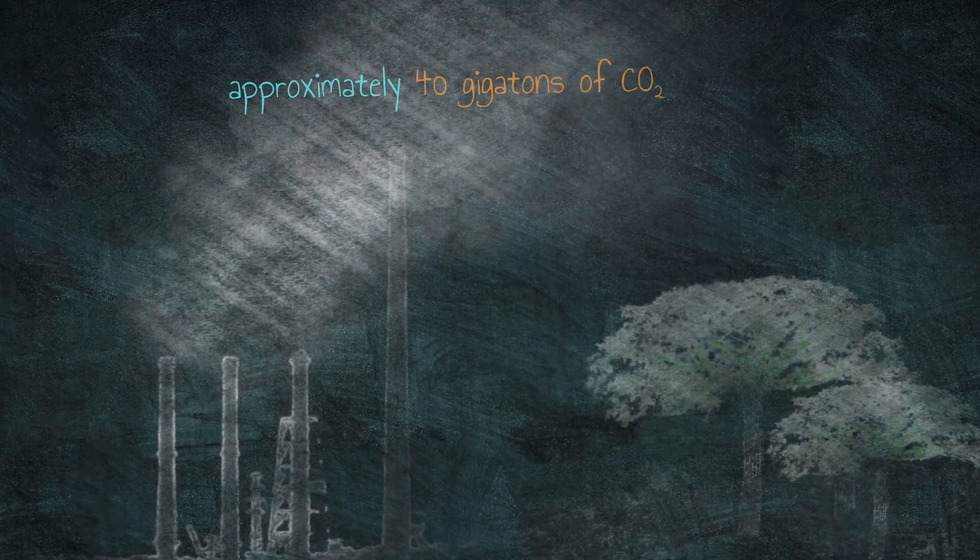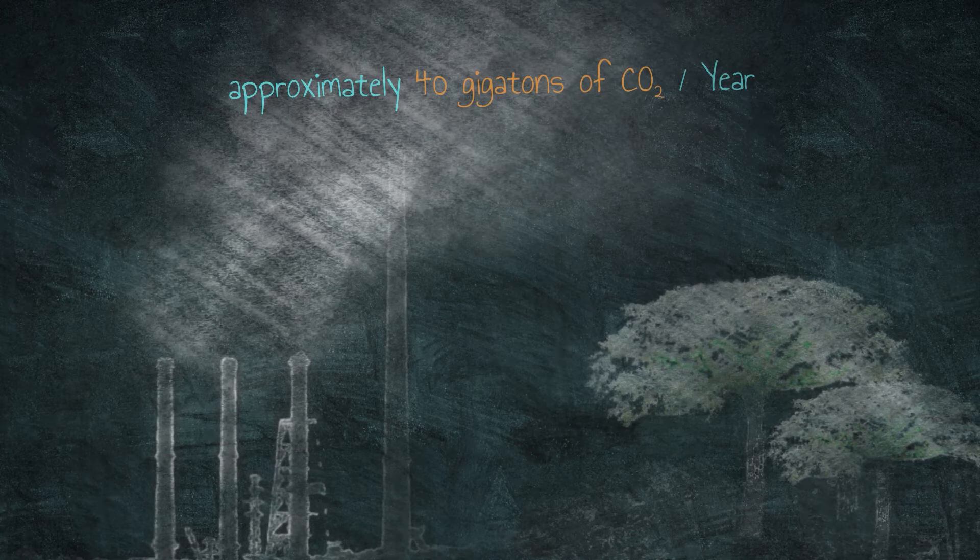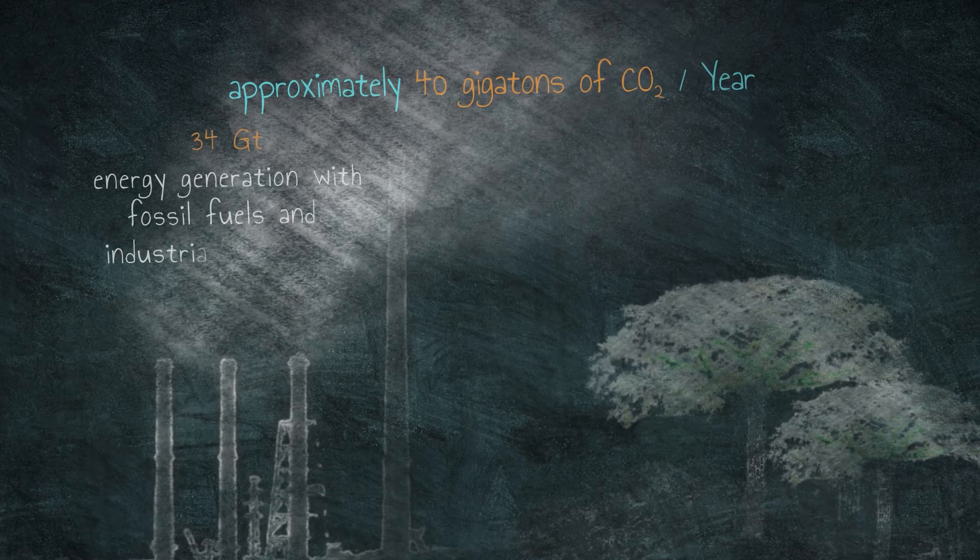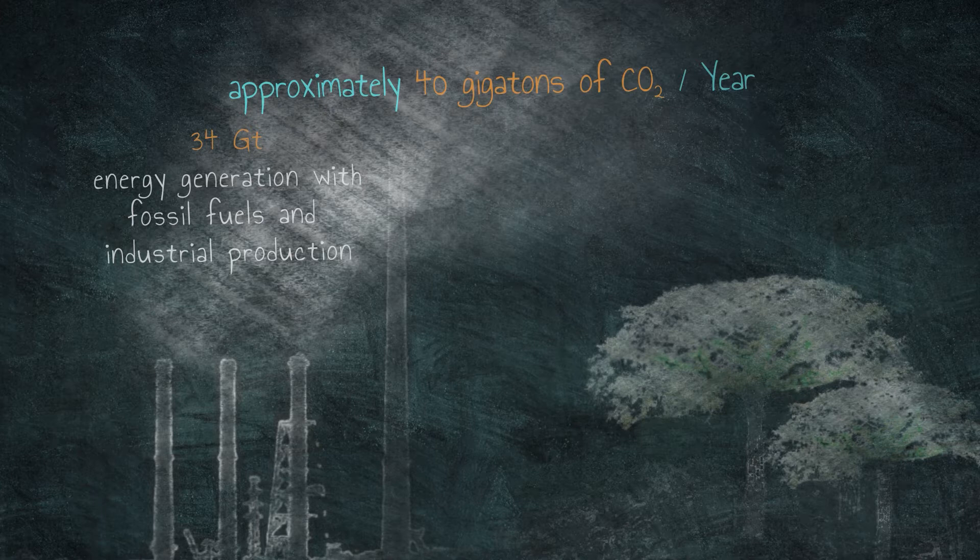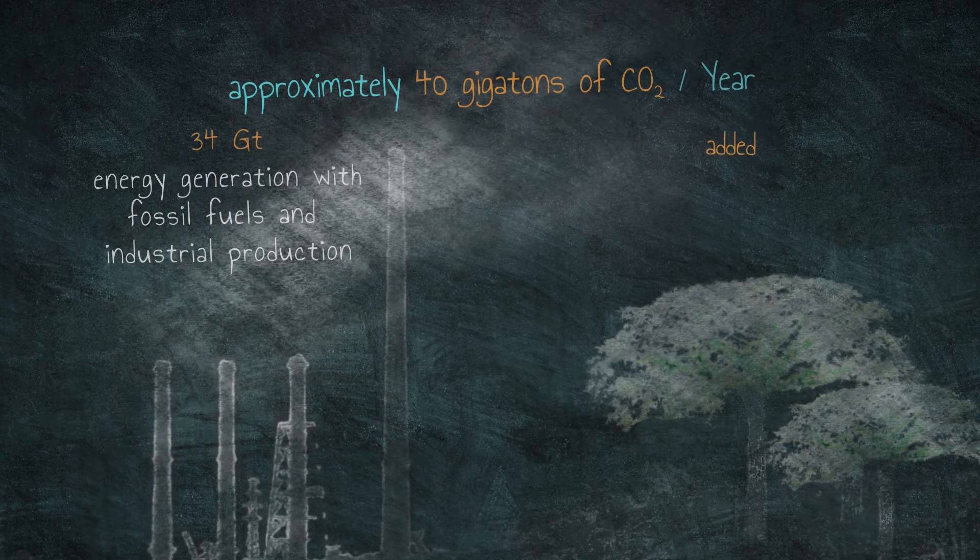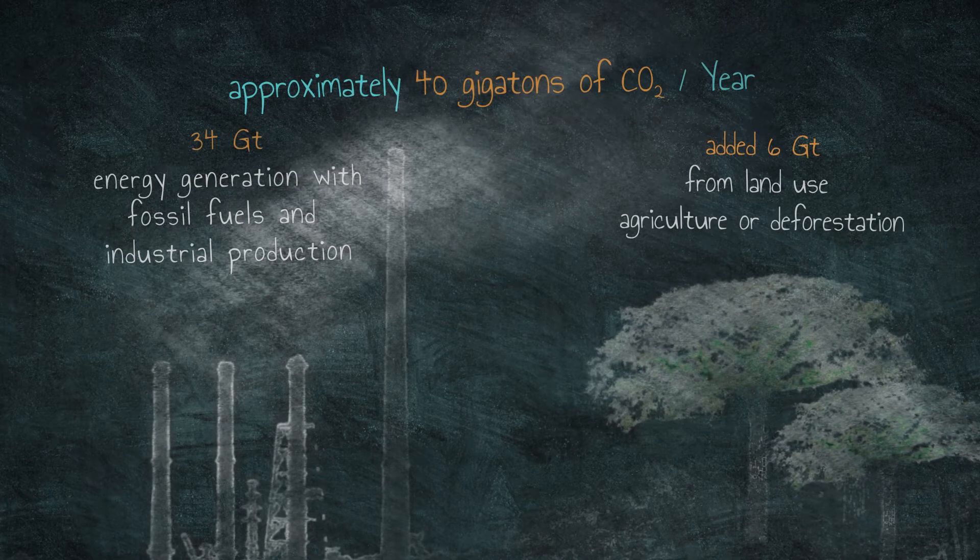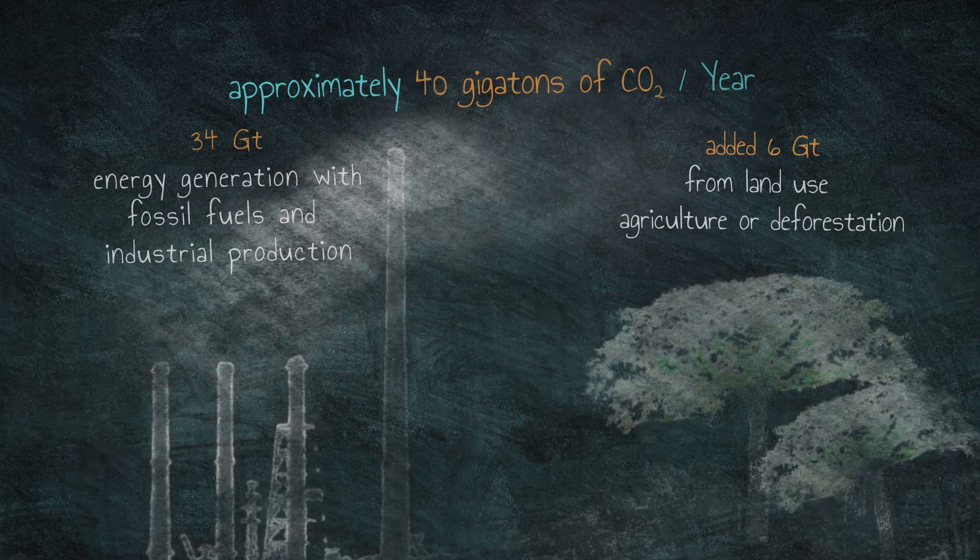Currently, humans altogether release approximately 40 gigatons of carbon dioxide in a single year. Of this, roughly 34 gigatons come from fossil fuels and industrial production, and an additional 6 gigatons are from land use, such as agriculture or deforestation.